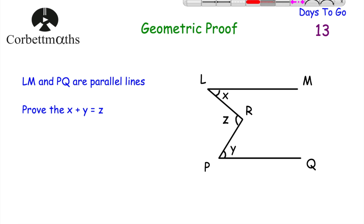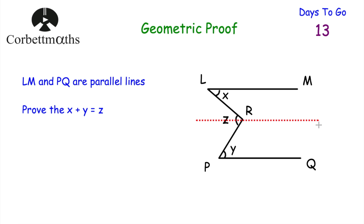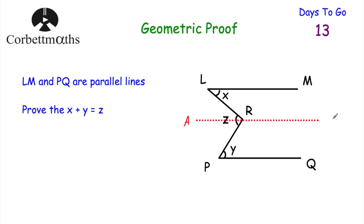What I'm going to do is draw another line on the diagram — the line AB. This line AB passes through the point R and it's parallel to LM and PQ. So this line is parallel to the other two horizontal lines, and I'll call it AB. So now we've got LM, AB, and PQ, all parallel, and AB passes through R. We're going to look for alternate and corresponding angles.